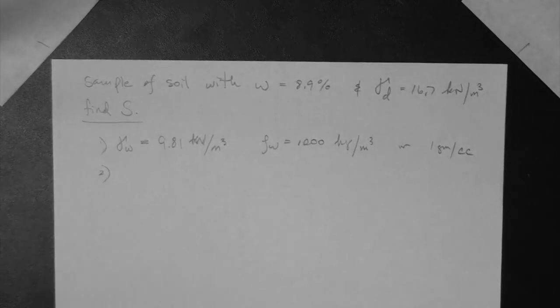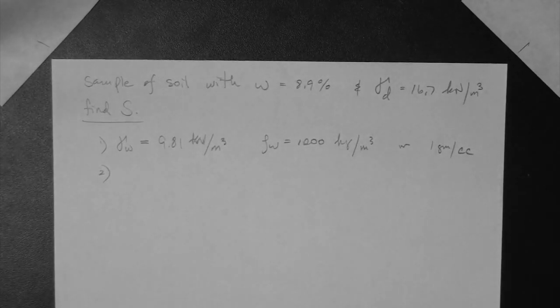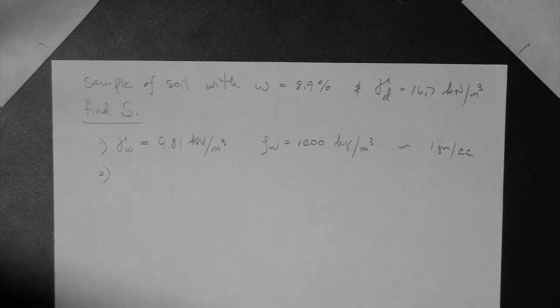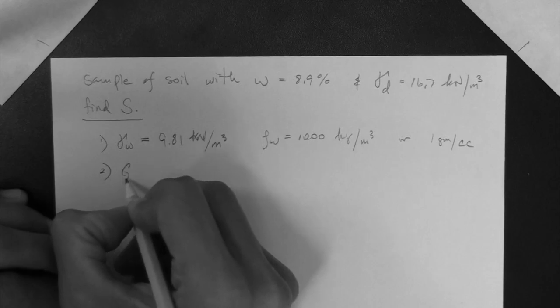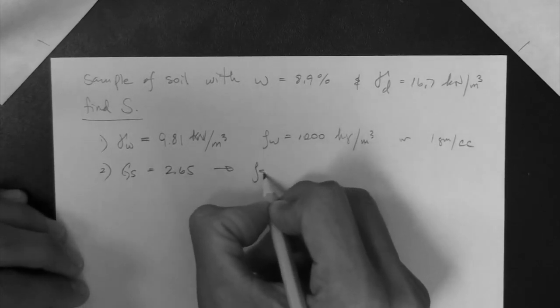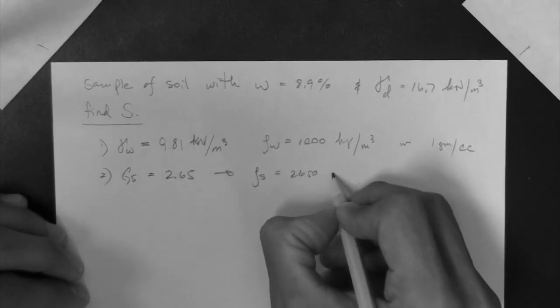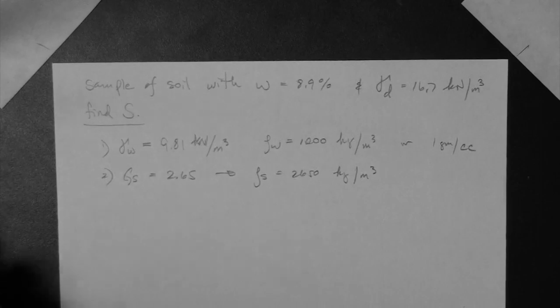Number two, are we given the mass density of the solids or the specific gravity of the solids? We are not given that, so we can assume that. Remember the strategies that we discussed in the previous video. So we can assume that the specific gravity is 2.65, which is to say that the rho s is 2.650 kg per meter cubed.